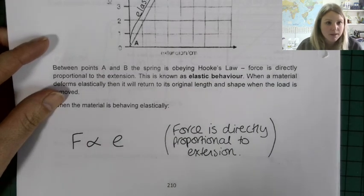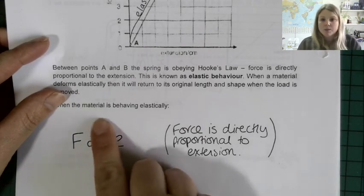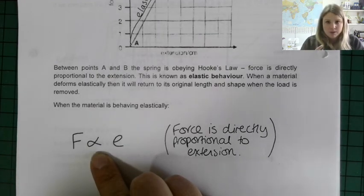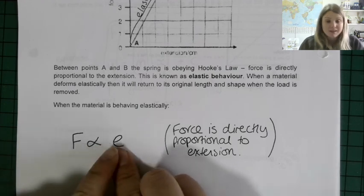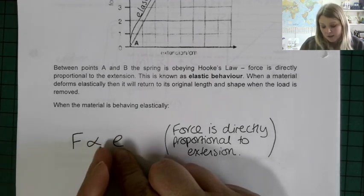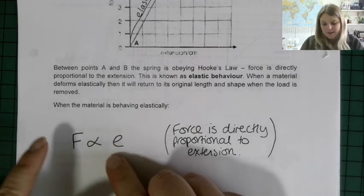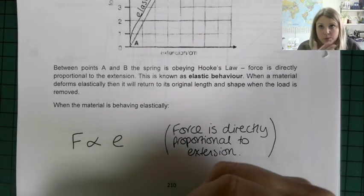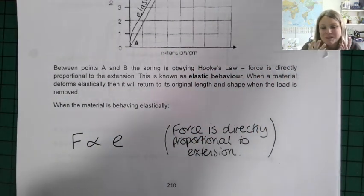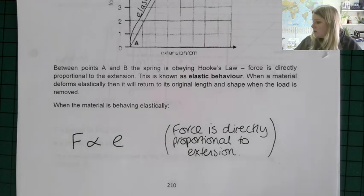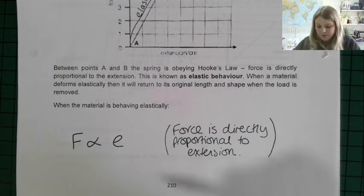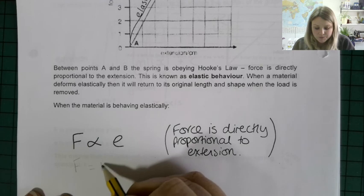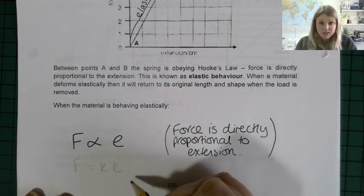If you have two things which are directly proportional to each other, it means there's a constant that links them. No matter what the size of the extension, if you multiply it by a certain number you get the force. It could be F = 2E, or F = 0.64E. Whenever two things are directly proportional you can write it as F equals some constant multiplied by E, and that equation is the equation for Hooke's Law.